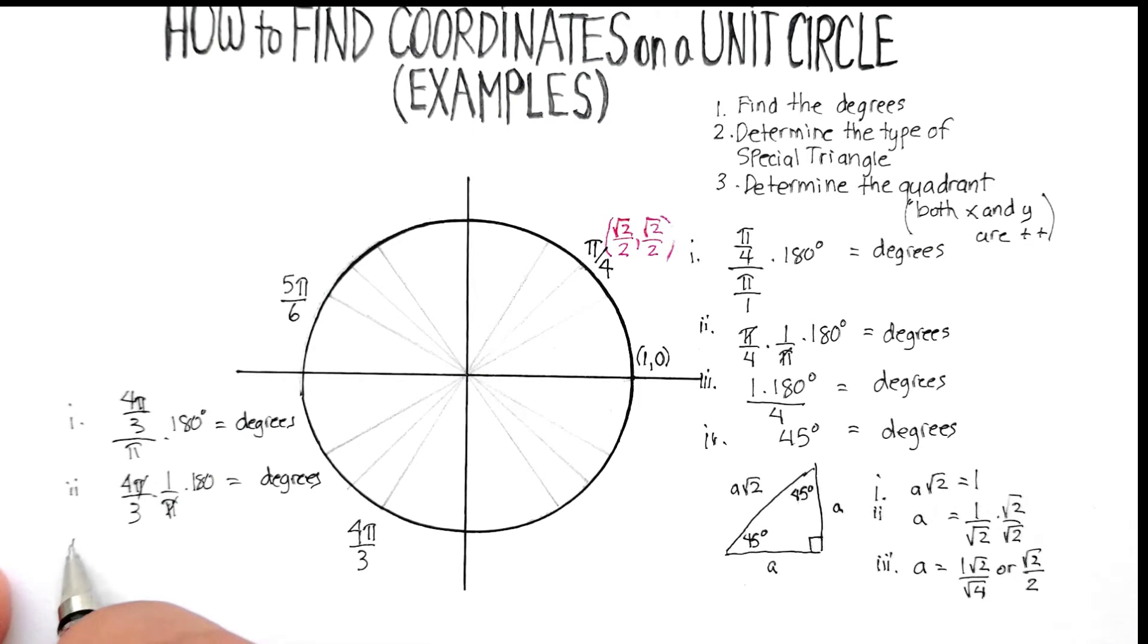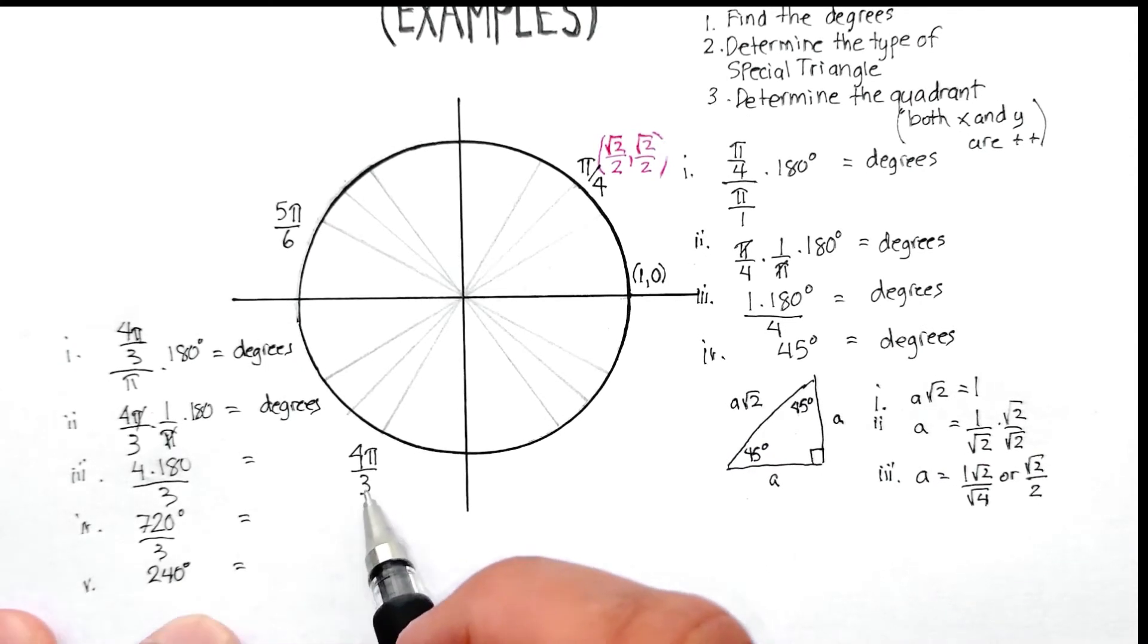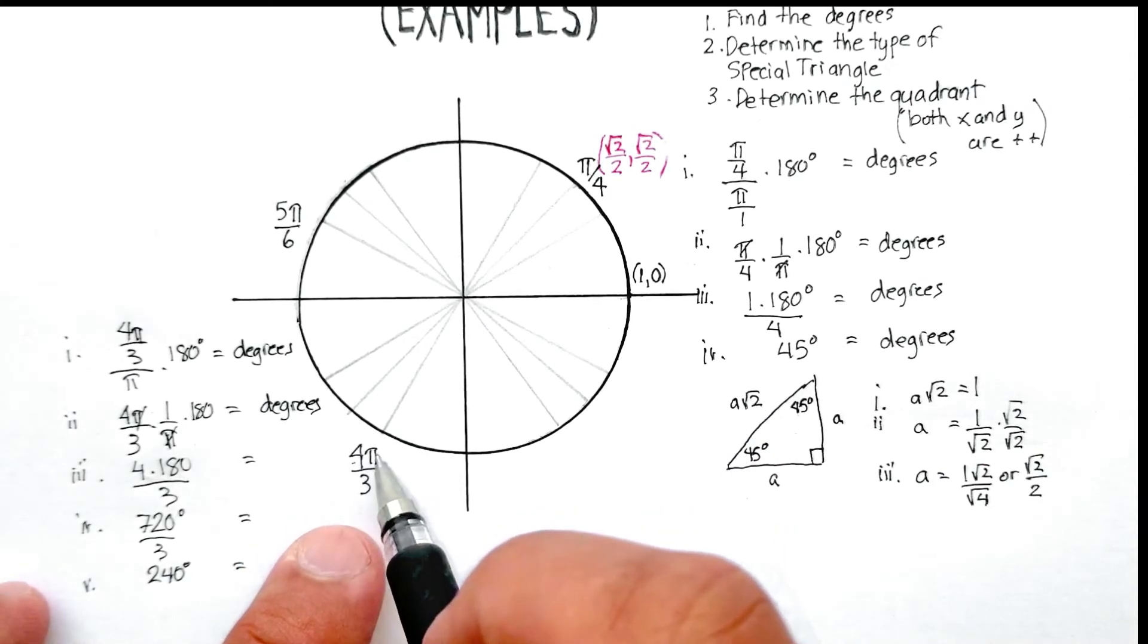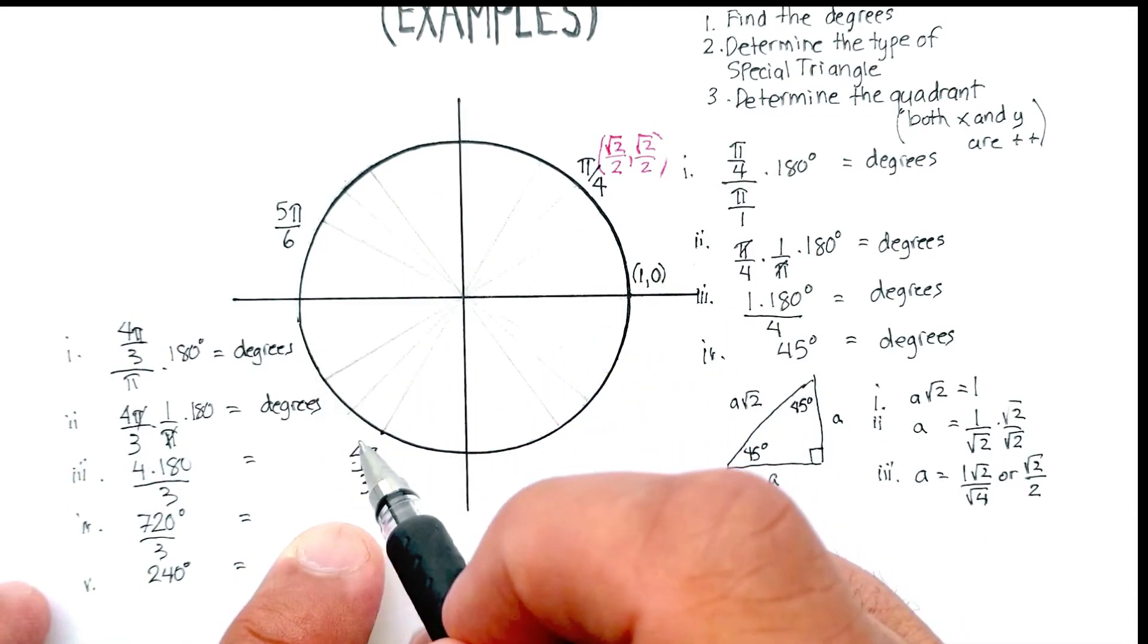Those cancel, and I get 4 times 180 divided by 3, which is 720 divided by 3, which is actually 240. So the number of degrees there is 240 degrees at this location. So at where 4π over 3 is located, that's 240 degrees.